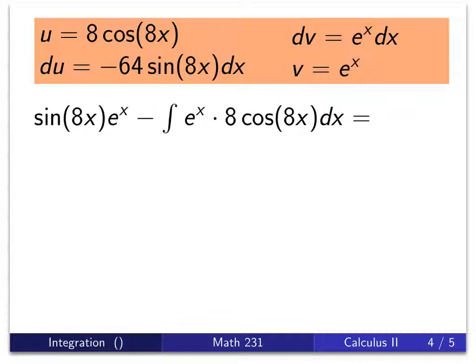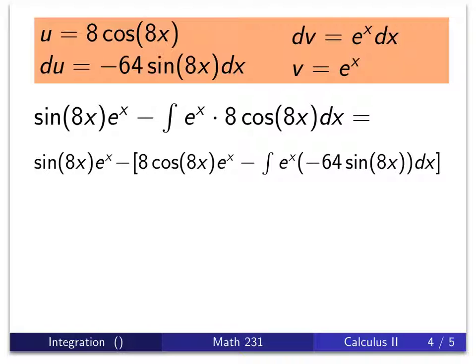So where do we go from here? Well, we've got to be very careful because of this minus sign, so what I'm going to do is put in some brackets when I go to the next step. We're going to do u times v minus the integral of v times du, and du is this awful -64 sin(8x) dx.